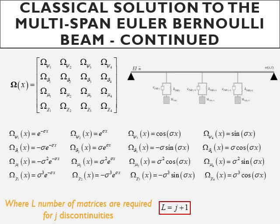In the interest of clarity the matrix Ω(x) is expanded here and we see that it comes from the solution of the eigenvalues within the characteristic equations. I would like to stress or emphasize again that the classical method requires j+1 number of matrices to be constructed for j number of attachments or supports.